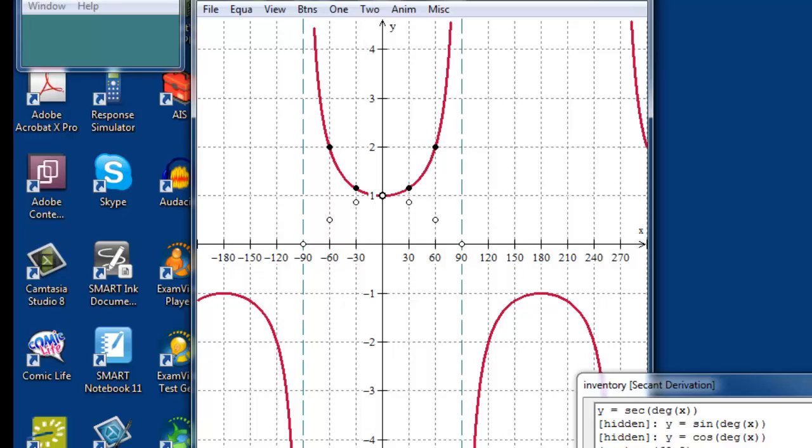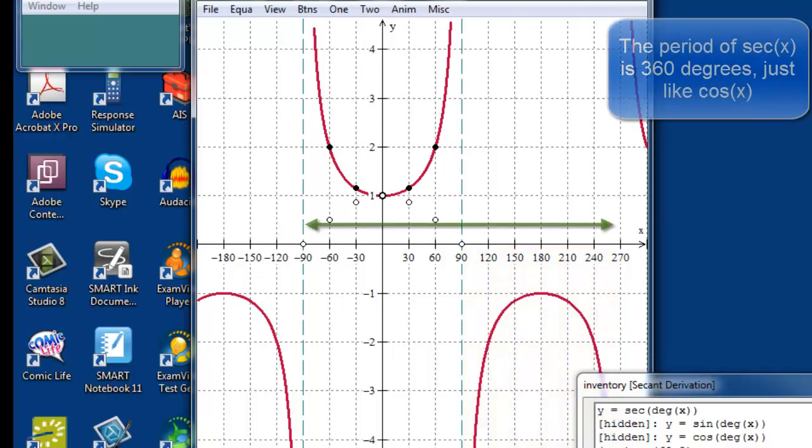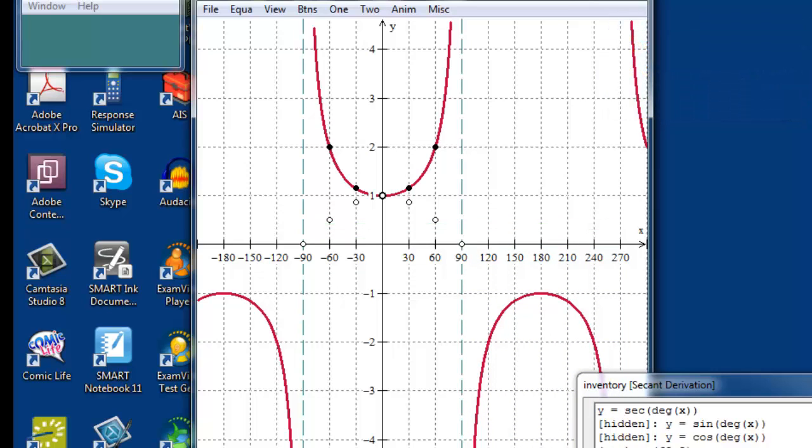The first positive is negative 90 to 90. And then the downward facing U goes from 90 to 270. Since we need both an upward and a downward U to complete the pattern for the secant, we know that the period for the secant is 360 degrees.